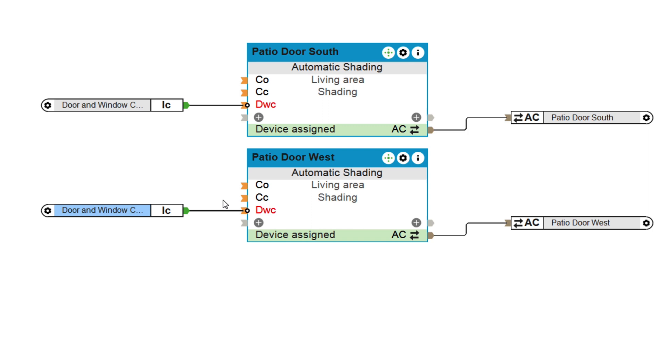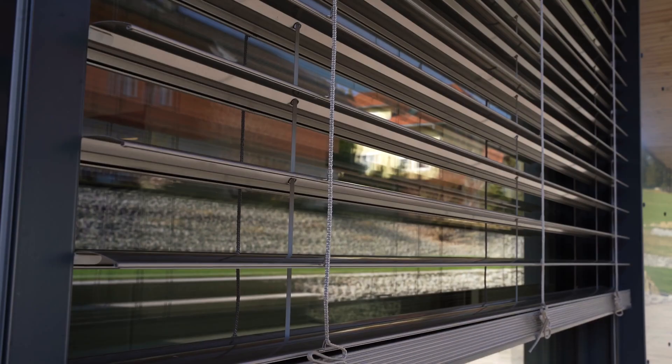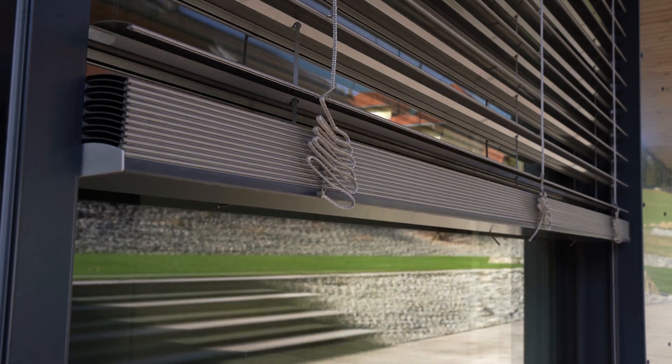And already, the shading can no longer descend automatically or via button when the door is open. But operation via the Loxone app is still possible. And there's one more thing we haven't talked about yet — the input DWC offers another feature: if the shading is closed and you open the door, the shading automatically moves up.